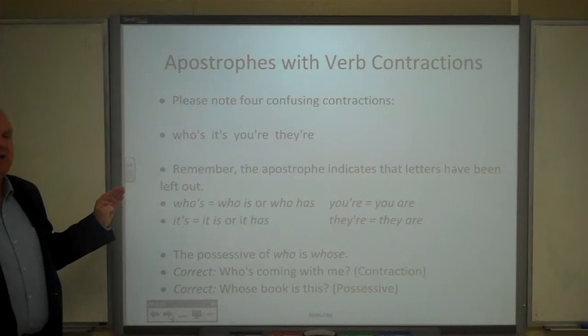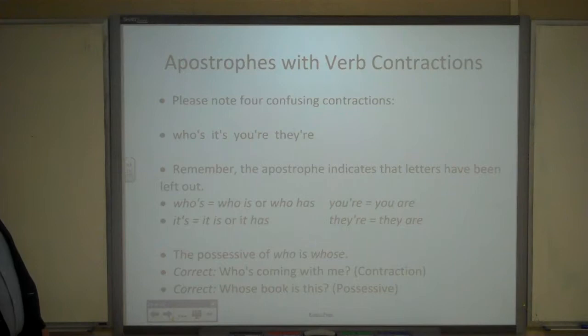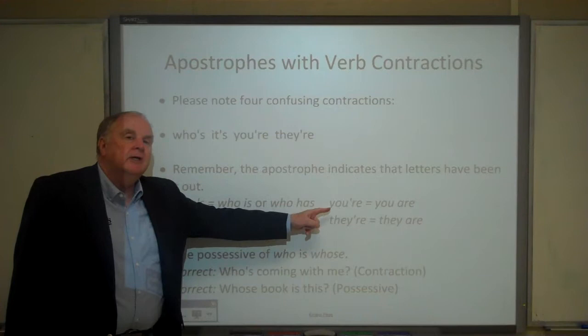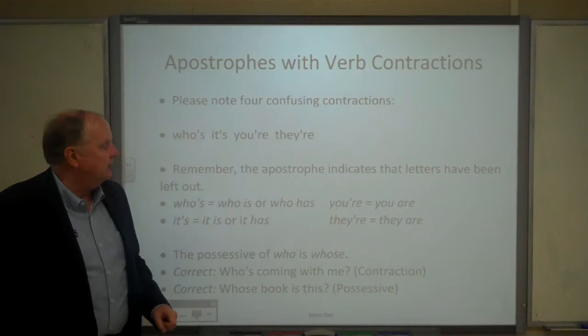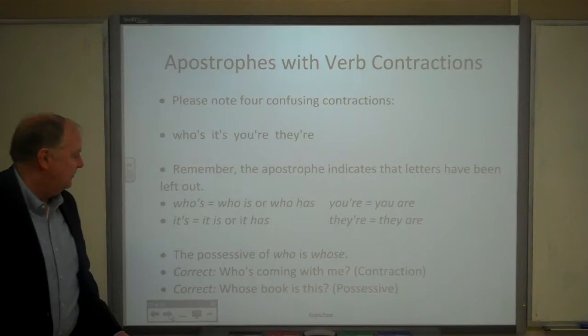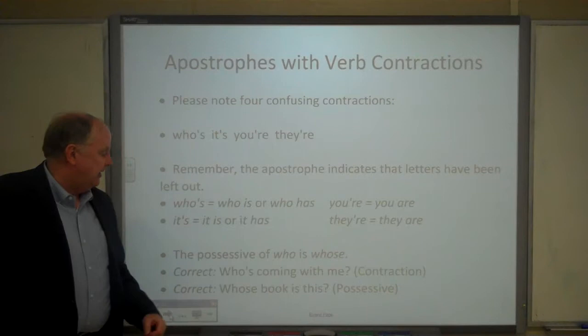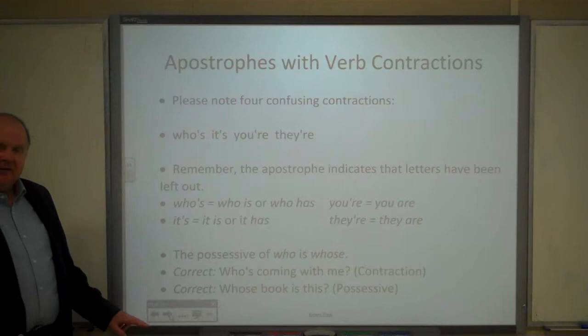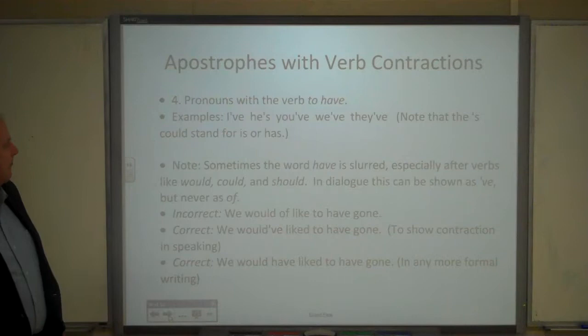I want to note four confusing contractions: who's, it's, you're, and they're. The apostrophe indicates letters have been left out. Who's with apostrophe S means who is or who has. You're with apostrophe RE means you are. It's with apostrophe S means it is or it has. They're with apostrophe RE means they are. Also, the possessive of who is whose — W-H-O-S-E. So 'who's coming with me?' uses the contraction — who is. Whereas 'whose book is this?' uses the possessive personal pronoun whose.